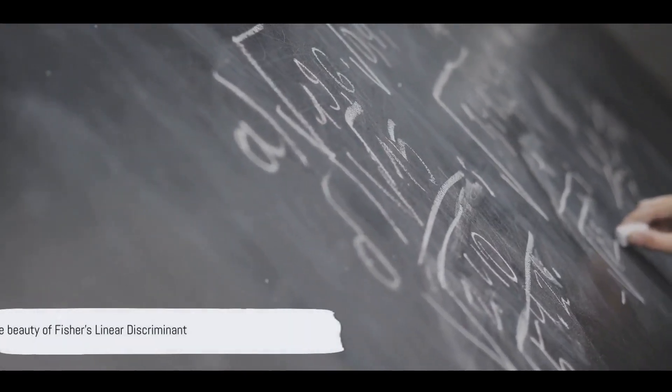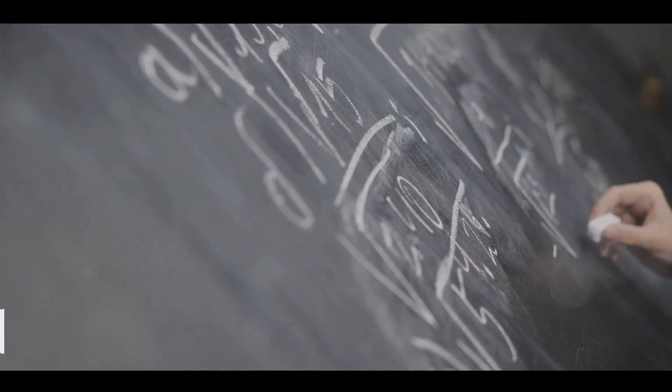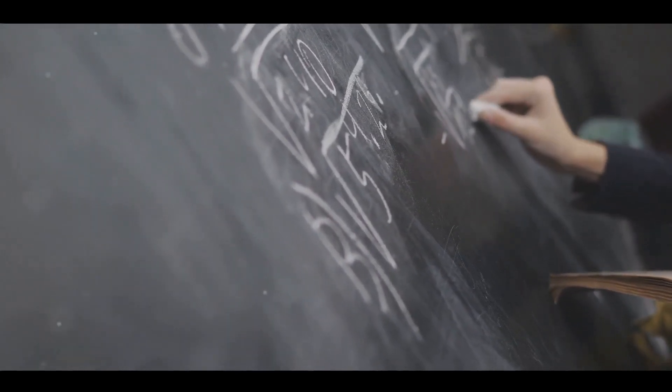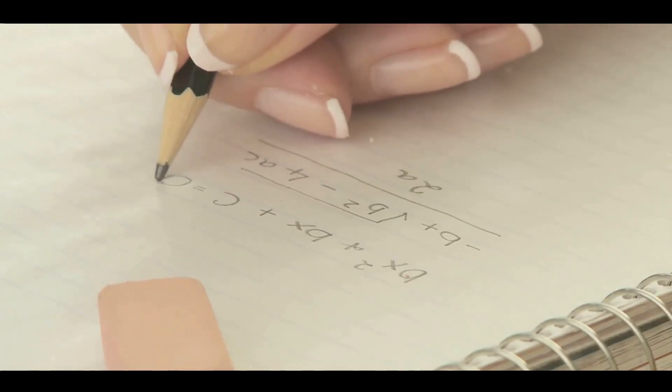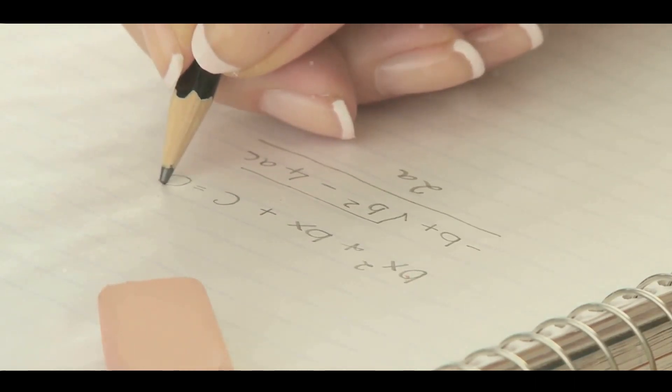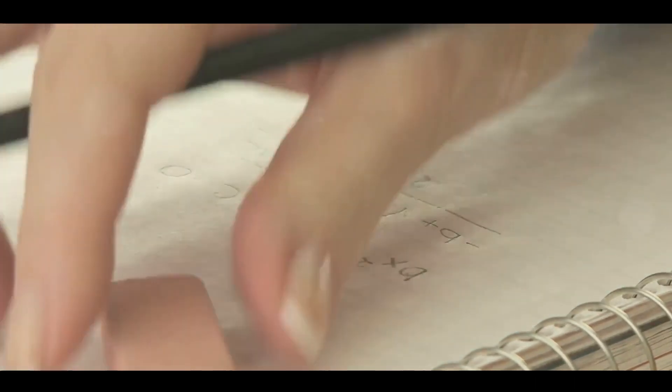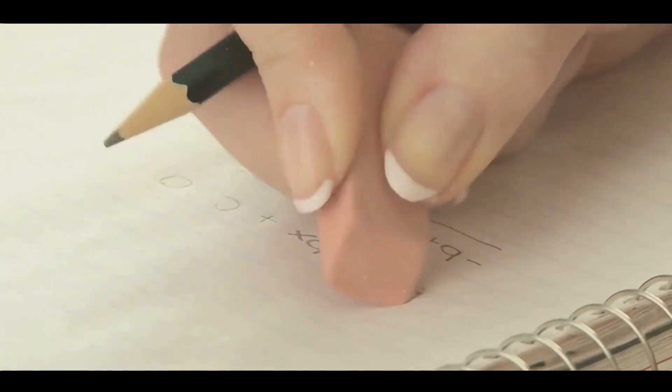Remember, the beauty of Fisher's Linear Discriminant lies in its simplicity and its ability to reduce dimensionality while preserving as much of the class discriminatory information as possible. And there you have it — a step-by-step guide to understanding Fisher's Linear Discriminant. The next time you see a machine successfully categorizing data, remember the role that Fisher's Linear Discriminant likely played in that process.